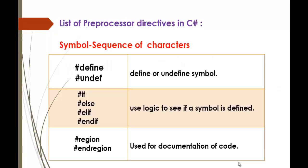Let me show you a list of Pre-Processor Directives available in C-Sharp. They are: Define, Undefine, If, Else, Elif, Endif, Region, and End Region.